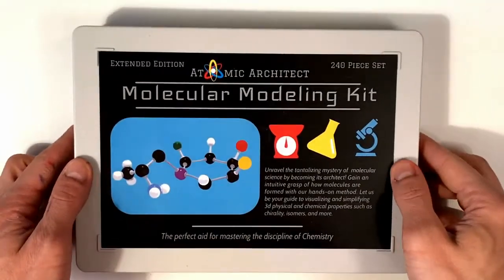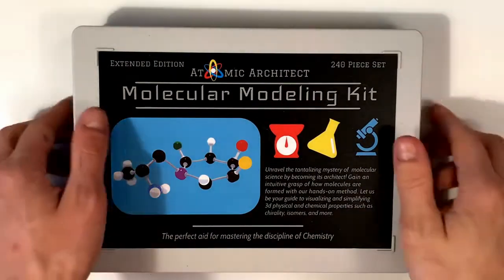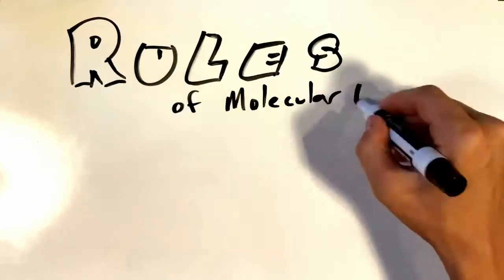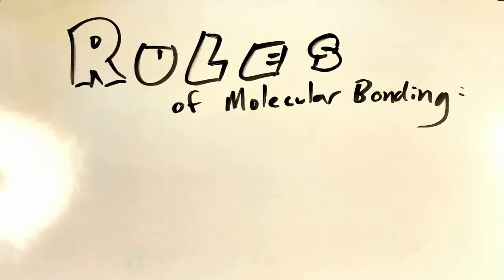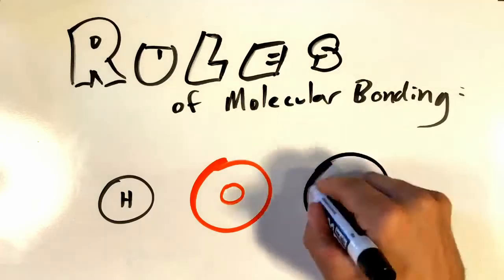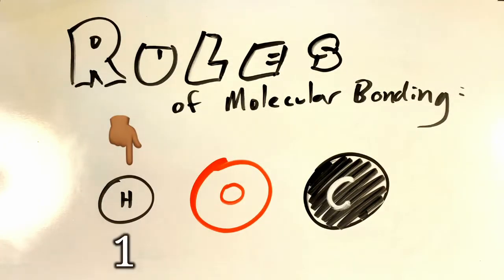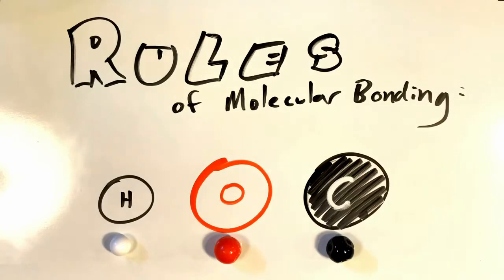This means we'll have to use our molecular modeling kit and revisit our rules of molecular bonding. So the atoms that we'll be dealing with most of the time are hydrogen, oxygen, and carbon. Hydrogen forms one bond, oxygen forms two bonds, and carbon will form four bonds. In this kit, hydrogen is white, oxygen is red, and carbon is black.